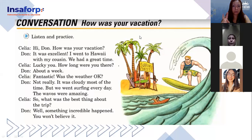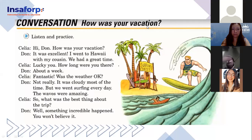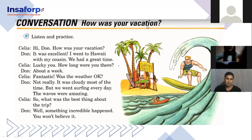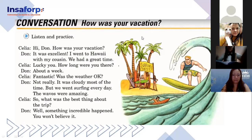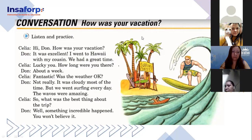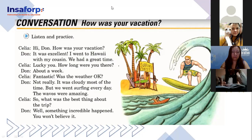Thank you — we need two more volunteers to read the same conversation. Xochitl, you're going to be Celia, and Azucena, you're going to be Don. Hi Don, how was your vacation? It was excellent! I went to Hawaii with my cousin. We had a great time. Lucky you! How long were you there? About a week. Fantastic! Was the weather okay? Not really — it was cloudy most of the time, but we went surfing every day. The waves were amazing. So what was the best thing about the trip? Well, something incredible happened — you won't believe it.